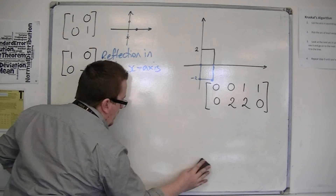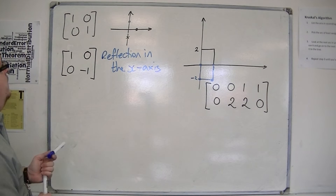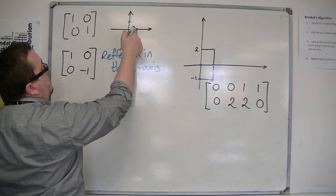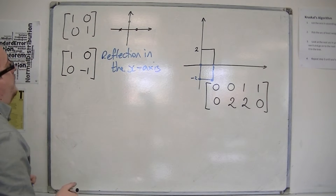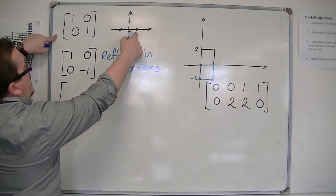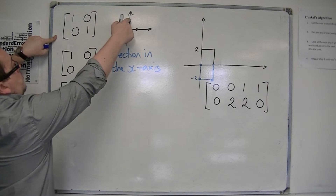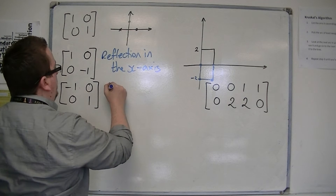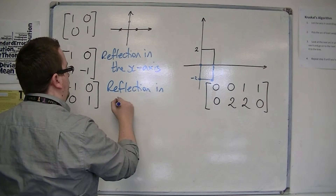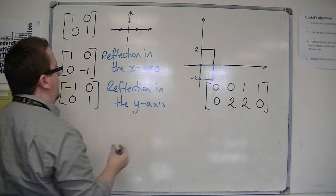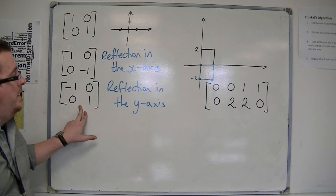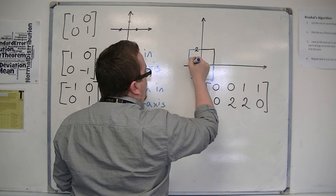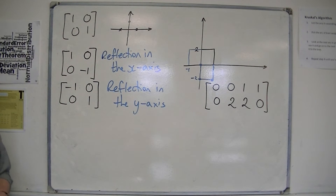Now if you wanted to reflect in the y-axis, then what we would find is that this point would remain fixed, but this point would flip over and get reflected. So the (1,0) would become (-1, 0), and the (0,1) would stay fixed. So this should be a reflection in the y-axis. You can apply that matrix to the coordinate matrix and you should find that you get a rectangle over here.